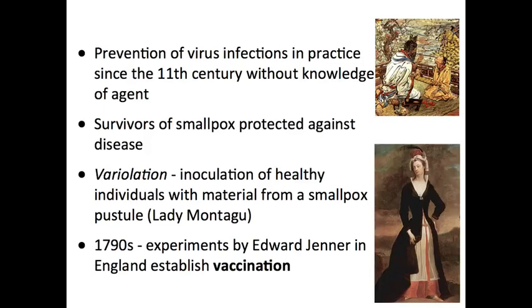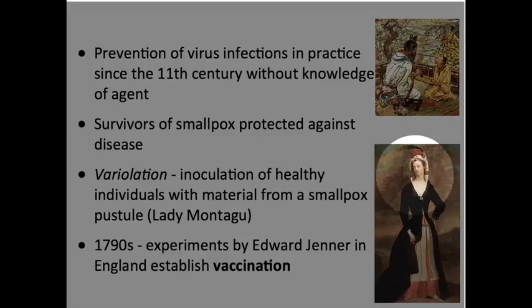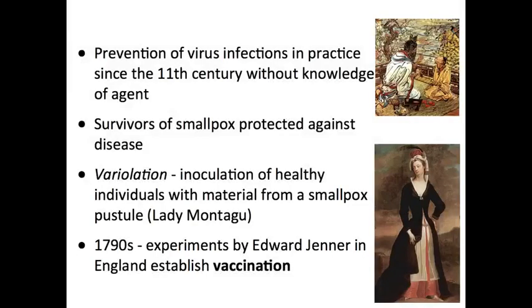Lady Montague, who was the wife of the British ambassador to Turkey, heard about this in Turkey and brought it back to the UK, and it spread pretty widely. Finally, in the 1790s, Edward Jenner took a logical approach. He noticed that milkmaids who got cowpox — a mild form of smallpox — on their hands never got smallpox. So he decided to immunize people with cowpox, and they were protected. That was the first vaccination, and many years later, Pasteur called it vaccination in Jenner's honor because of the cowpox story.